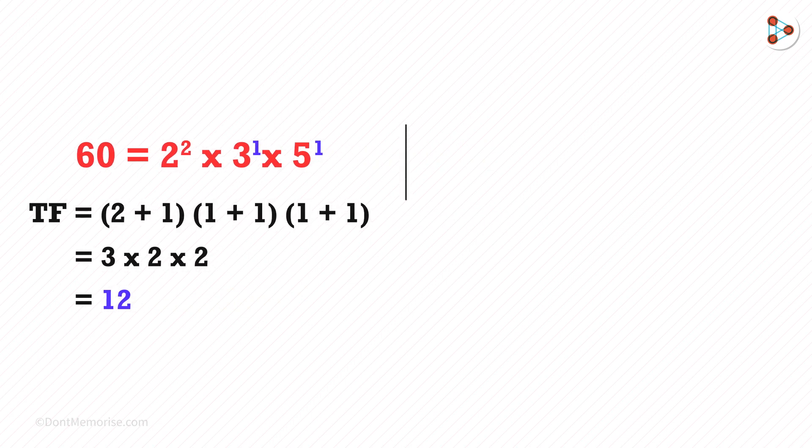So the prime factorization of 336 is this. What will be the total factors here? Here the powers of the prime factors are 4, 1 and 1.